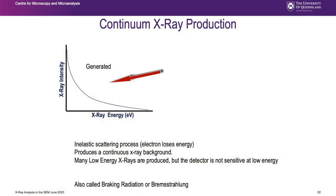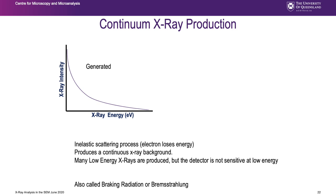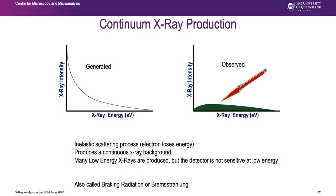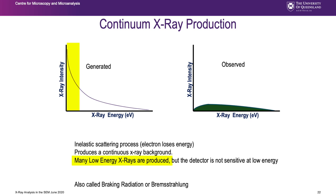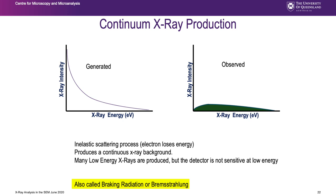The actual continuum spectrum generated looks like the one on the left - we get a large number of very low energy X-rays close to zero energy, because the most likely interaction is for the electron to lose just a small amount of energy. But we only see what our detector shows us. The observed spectrum looks different because the X-ray detector loses efficiency as it approaches zero energy. In theory the spectrum goes up towards zero, but in reality what we see falls down towards zero - that's a measure of detector inefficiency. This continuum X-ray is also called Bremsstrahlung, a common term in the literature.